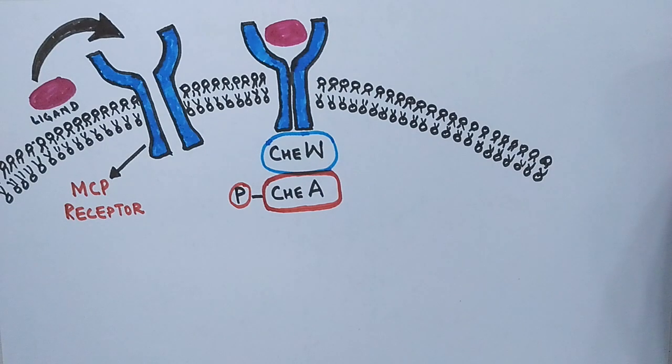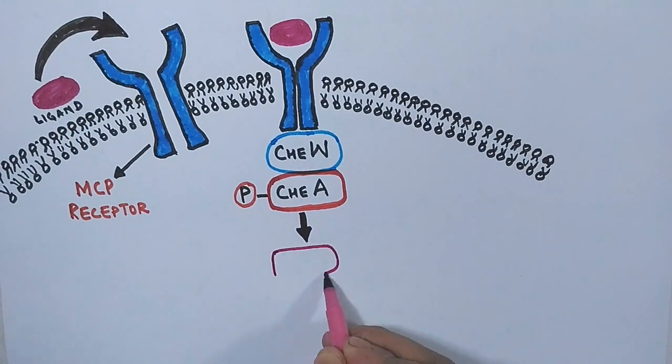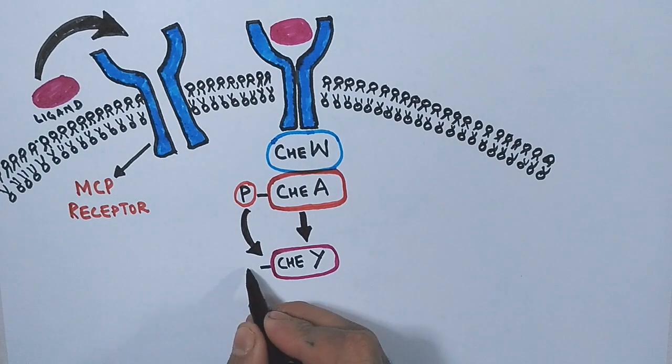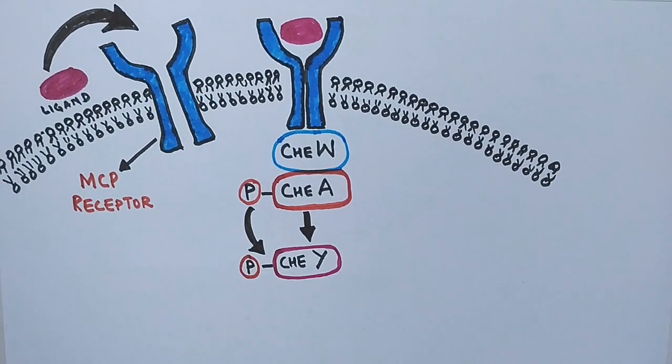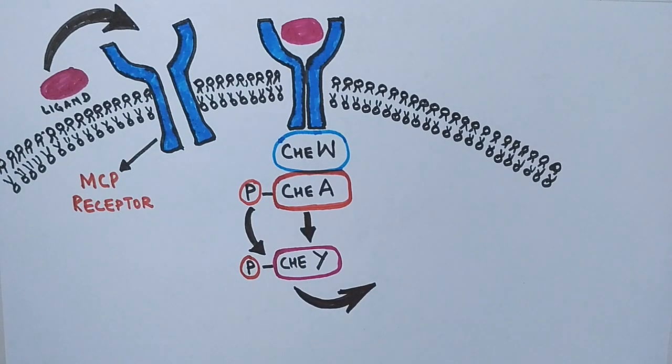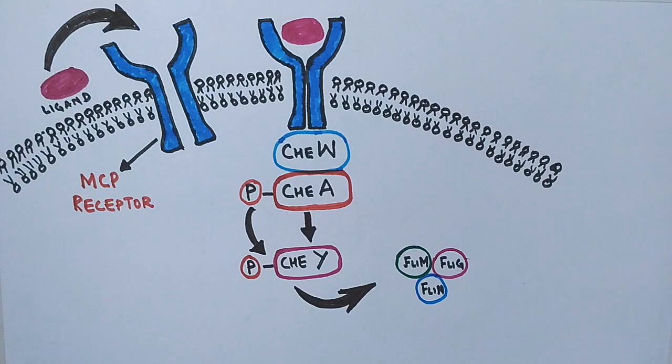After the autophosphorylation of CheA protein, the CheA protein activates the CheY protein by transferring the phosphate towards the aspartate residue of CheY. Finally, the CheY protein phosphorylates the protein complex composed of three proteins: FliM, FliG, and FliN.